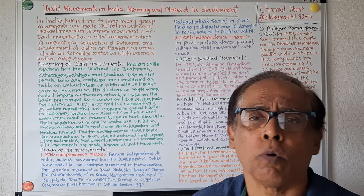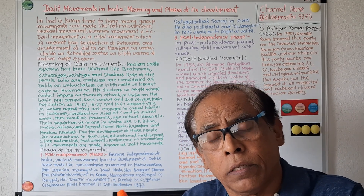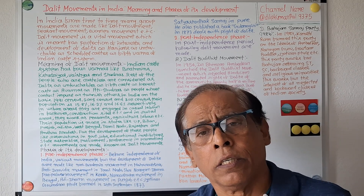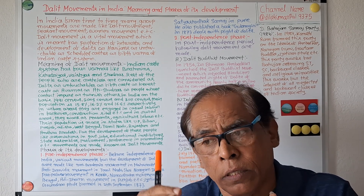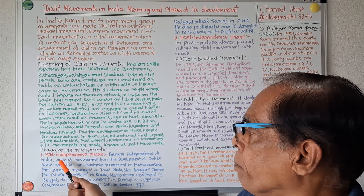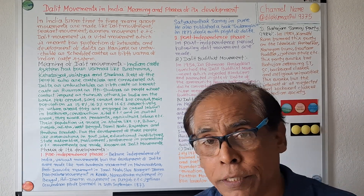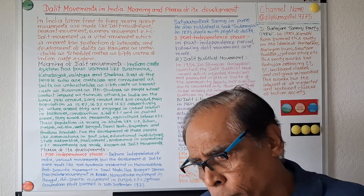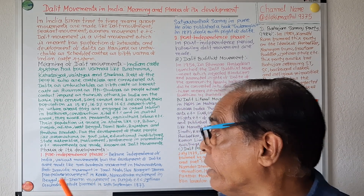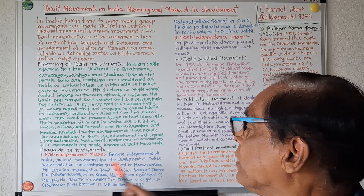So we are clear about the meaning of Dalit movements. Now let us discuss the phases of its development. How did Dalit movements come about? What are the phases of these Dalit movements? Here we will take up two phases: the pre-independence phase and the post-independence phase. Before the independence of India, various movements for the development of Dalits were made.